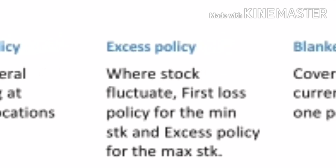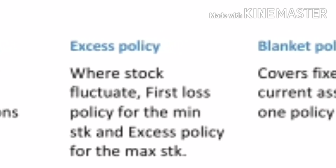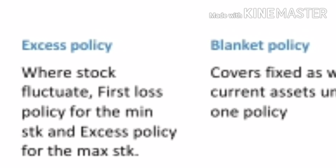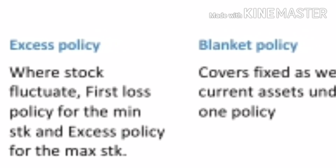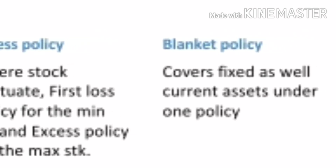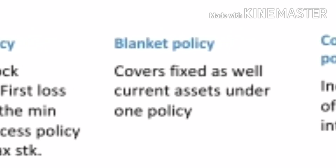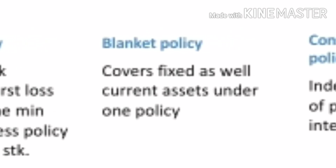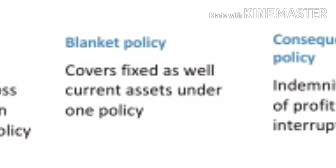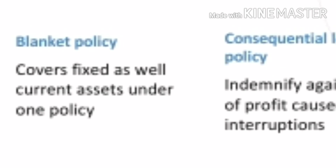Next is excess policy. Where the level of stock fluctuates widely over a period of time, the company can take two policies at a time: a first loss policy for the minimal level of stock and an excess policy for the maximum level of stock. The next one is blanket policy, which covers both fixed as well as current assets under a single policy and single premium.